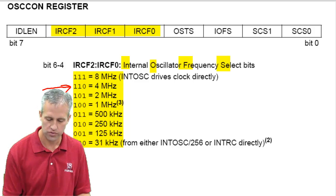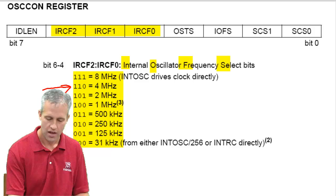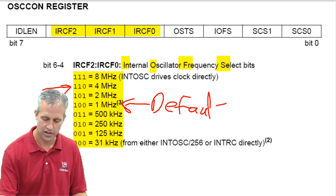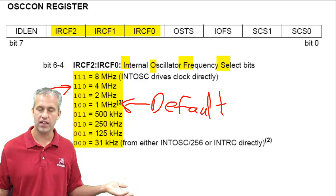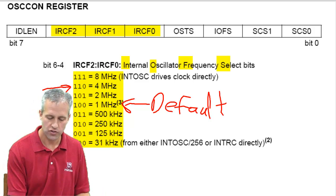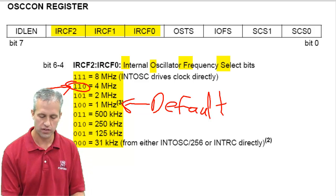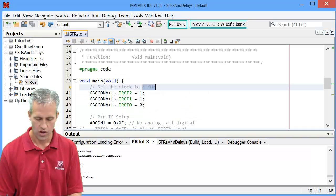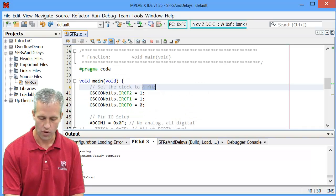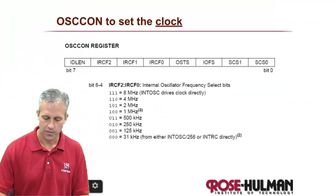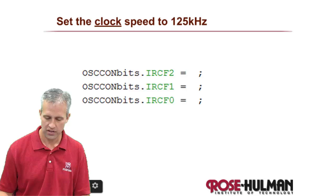The one that we use is of course 4 MHz. This little note here is what sets the default — if you don't set anything at all, it defaults to 1 MHz. But if you do want to set it to something other than that, you set those three bits. One, one, zero gives you 4 MHz — which is why we always set it to one, one, zero. So if you wanted to set it to something different, you would just set the bits differently.